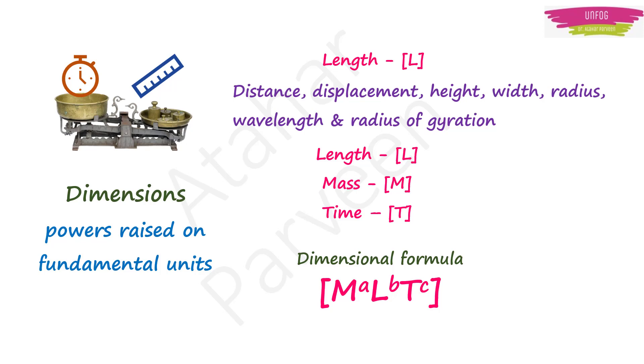Similarly, mass is represented as M. We write it as M within square bracket and time as T. We write it as T within square bracket. A dimensional formula can be written like this within a square bracket. You write it as M raised to A, L raised to B, T raised to C where A, B and C are the powers raised on these fundamental units.